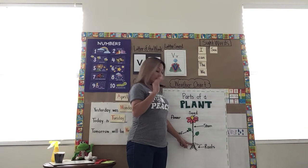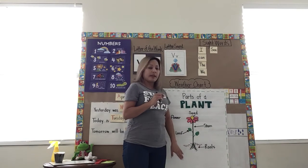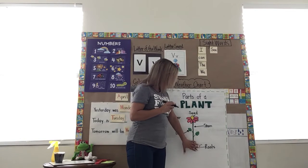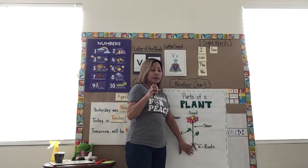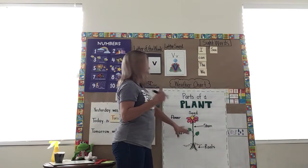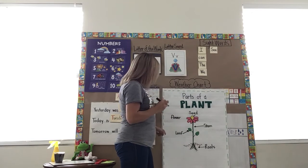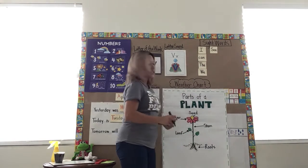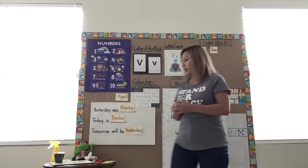The seed helps it continue making more plants. The stem holds it up straight and brings water and nutrients up to help it survive. The roots hold the plant in one spot, drink up the water and nutrients, and take it up to the stem. The leaf takes in the sunlight and oxygen and makes food for the plant. And the flower makes more seeds, and the pattern keeps repeating over and over.